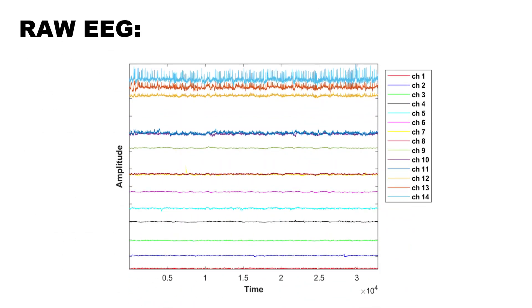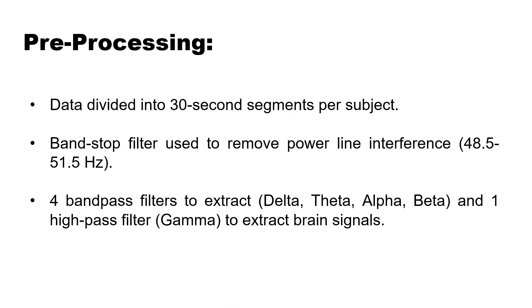This is the depiction of 14-channel data from DIMAS. In the preprocessing stage, we first divided the data into 30-second segments per subject. Then we applied a band-stop filter to remove power line interference, using a frequency ranging from 48.5 Hz to 51.5 Hz. Then we used four band-pass filters to extract delta, theta, alpha, and beta waves, and one high-pass filter to extract gamma waves from the brain signals.